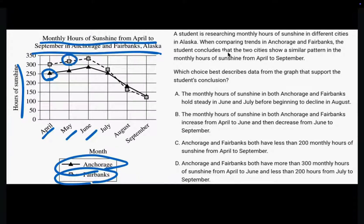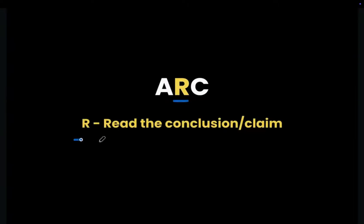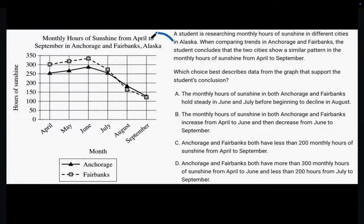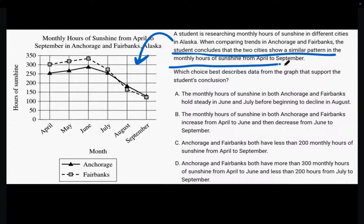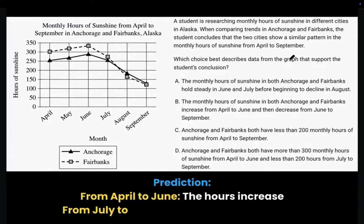Now let's skim the text and follow the second step in ARC — read the conclusion. We don't need to read the entire text because it just restates the stuff in the graph textually. The student concludes that these two cities show a similar pattern in the monthly hours of sunshine from April to September. So we need to find something similar between the two cities from April to September.